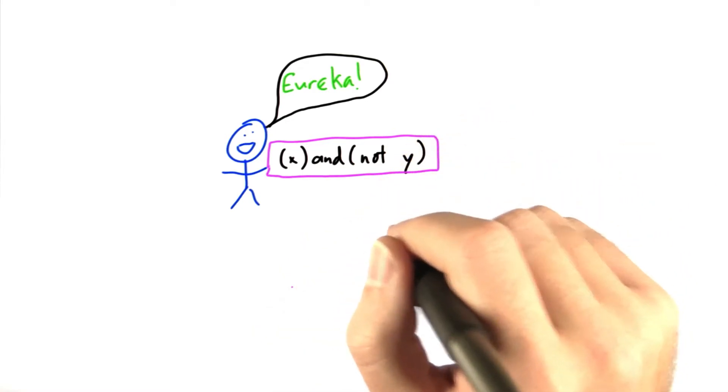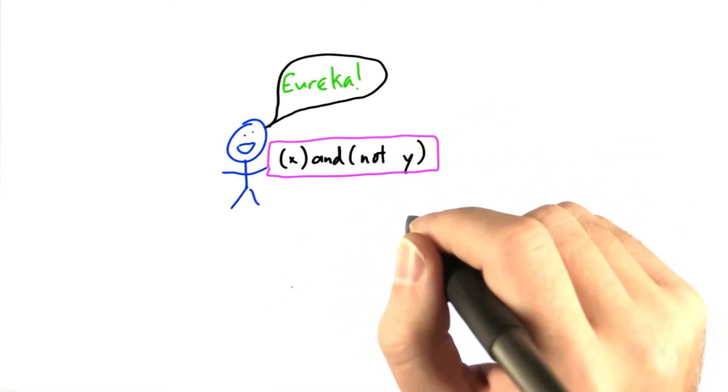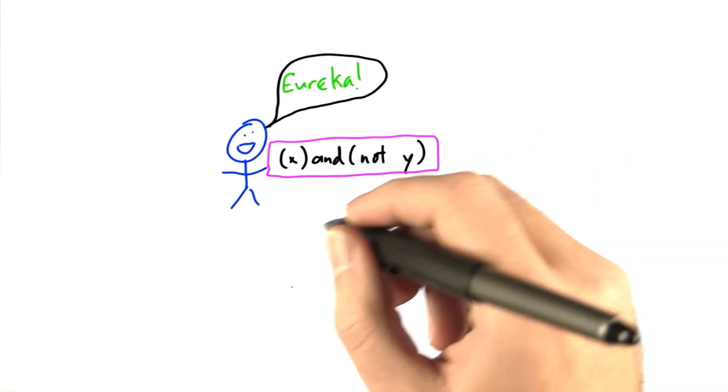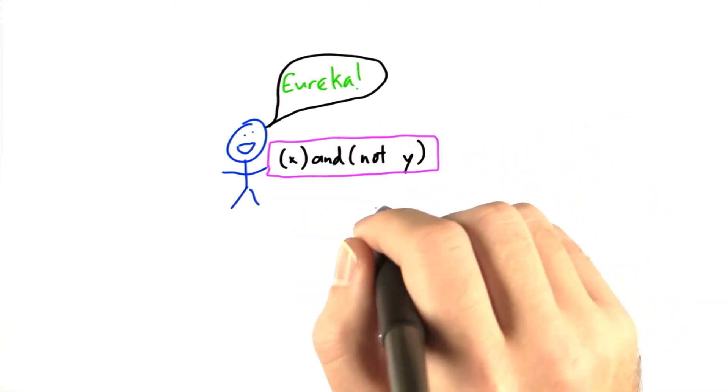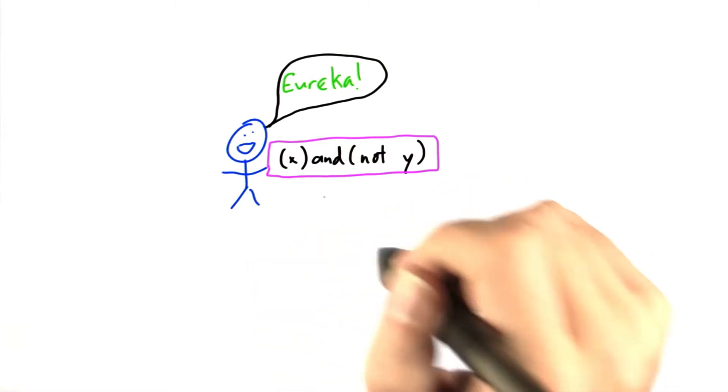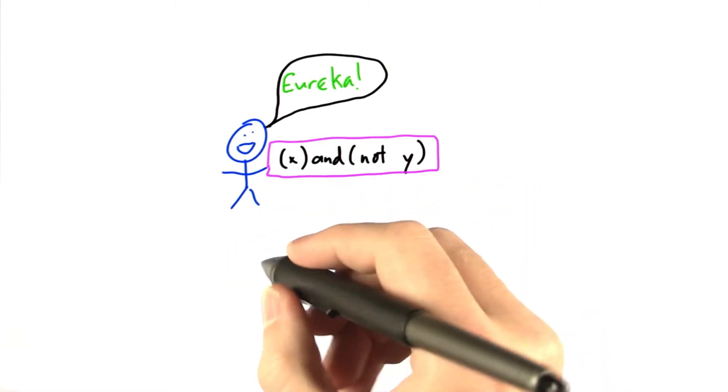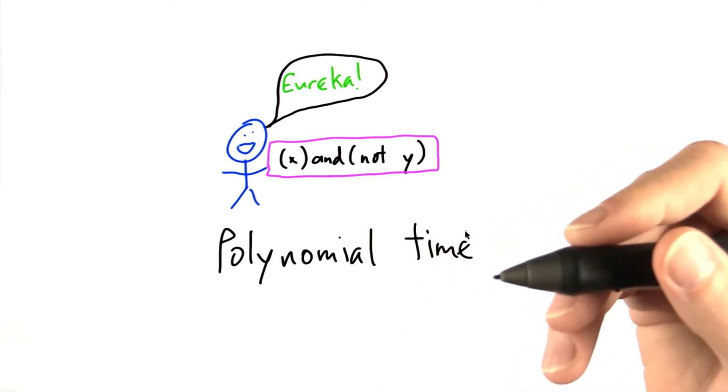And suppose Bob comes to us and tells us, I've already found out that this Boolean formula is satisfiable. Now, let's say we don't necessarily trust Bob. Bob is given to exaggeration. We'd like to be able to figure out in polynomial time whether or not Bob is telling us the truth.